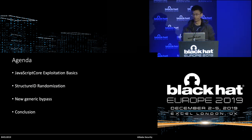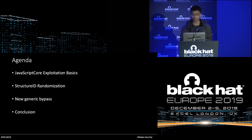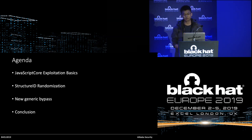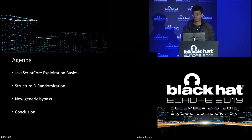Here is the agenda. First, I will briefly review the core steps of JavaScriptCore exploitation basics and discuss why we need to predict a valid structure ID. Then I will detail the structure ID randomization which was introduced earlier this year. Then I will detail my new generic bypass. Let's summarize the talk.